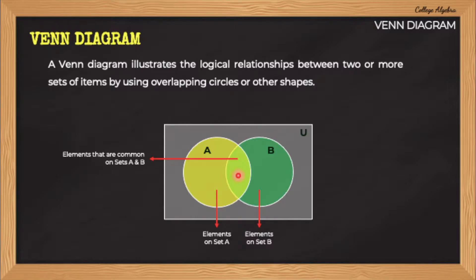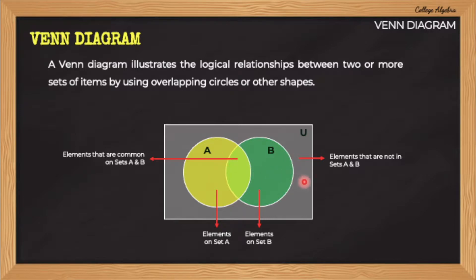Now, these sets are part of a larger set called the universal set, represented by U. Outside of these circles, we can find all the elements that are not present on both set A and set B.